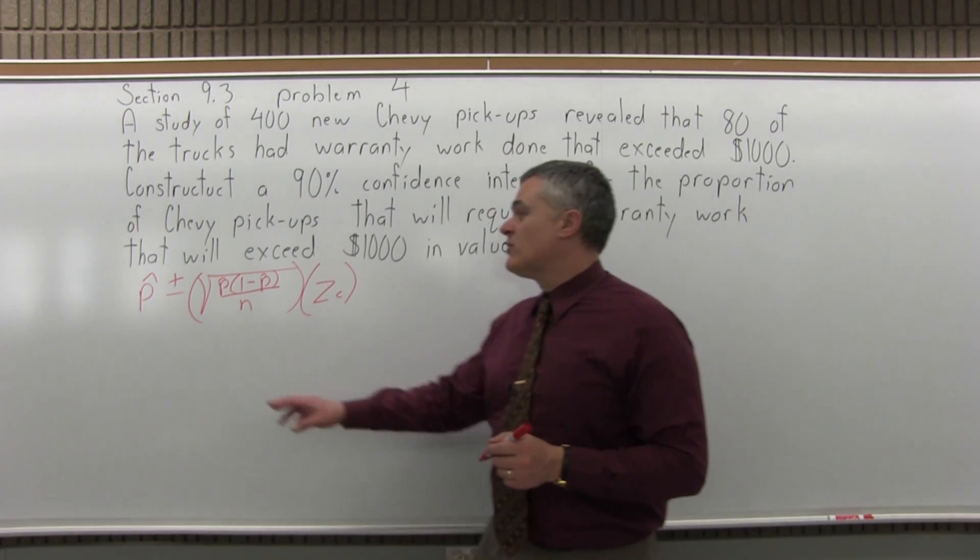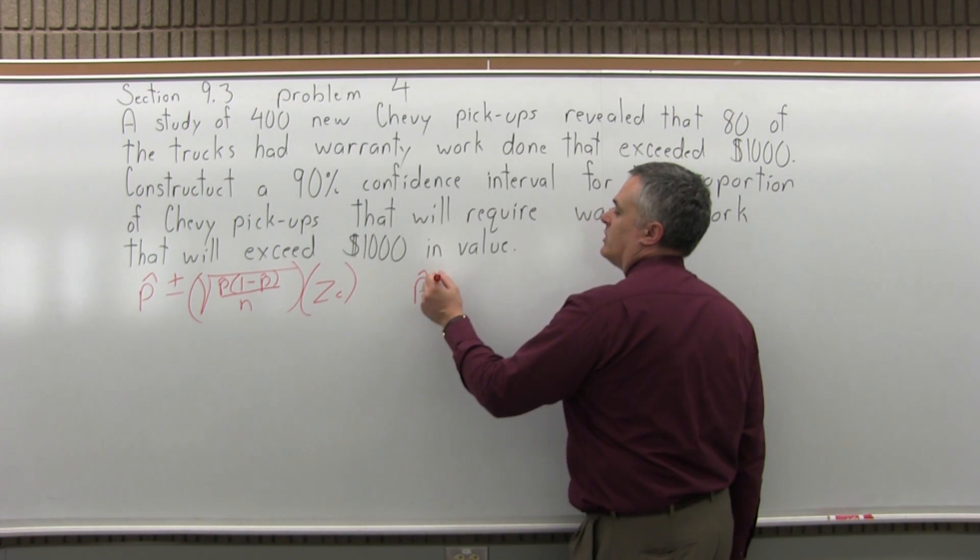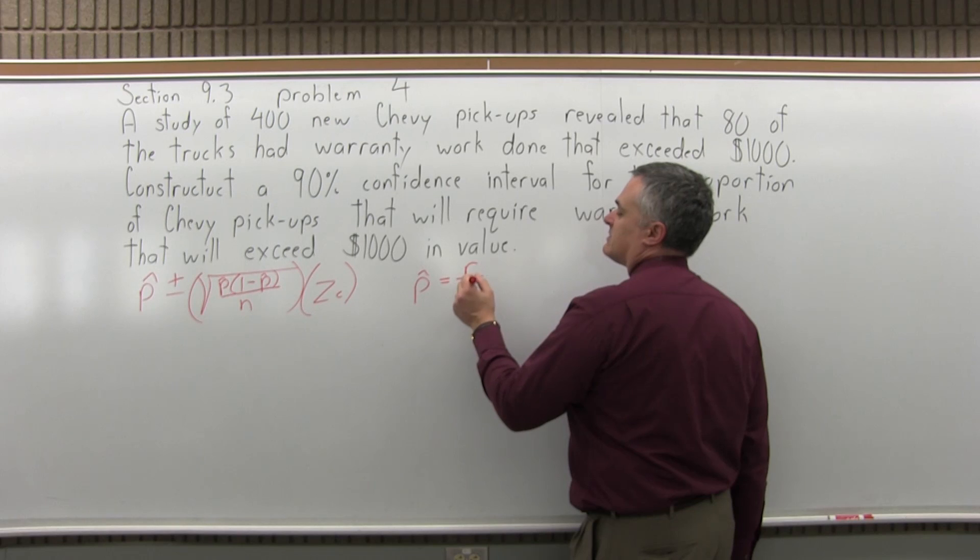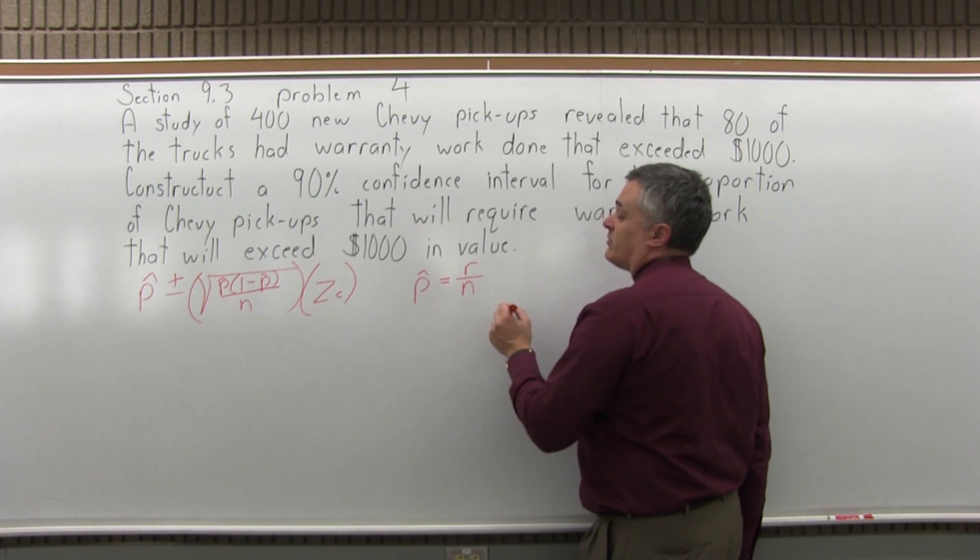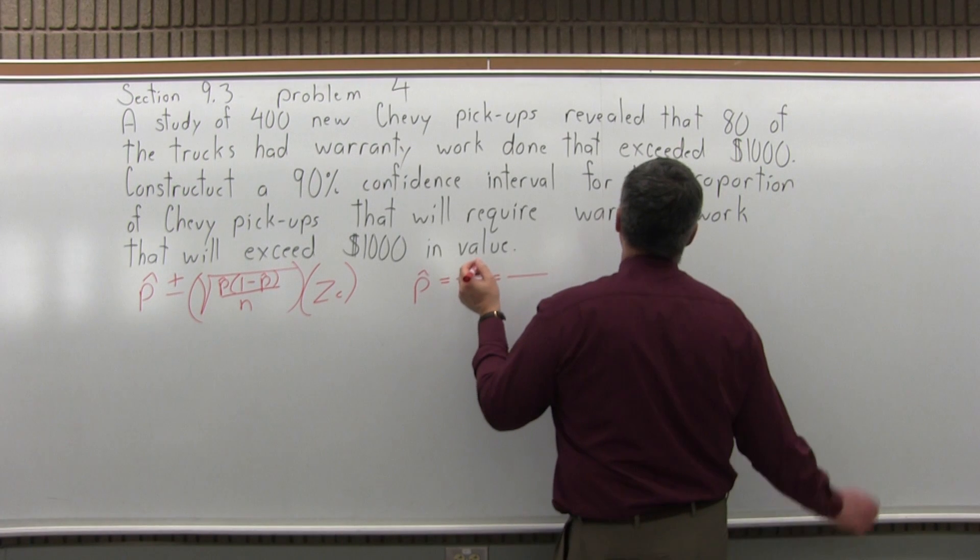So part of that formula is p-hat. What is p-hat? It's our estimate of the population proportion, which is r, the number of successful results over n, the total number of trials. So in this case, r, the number of successful results, is 80.